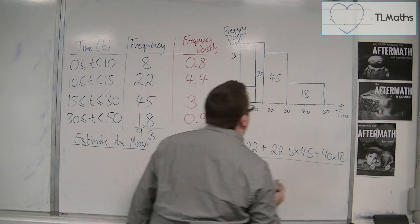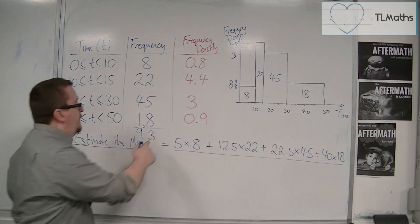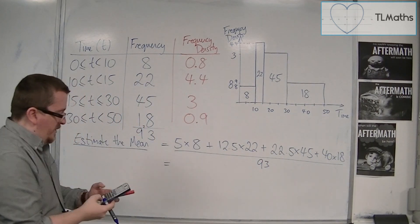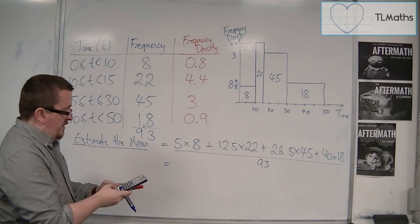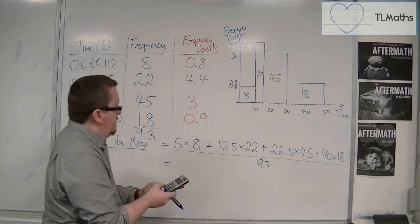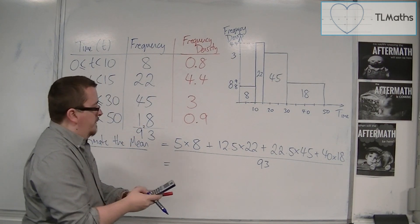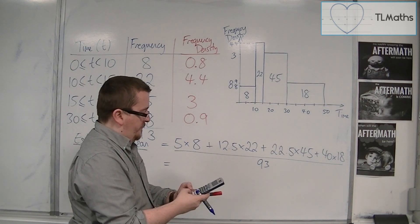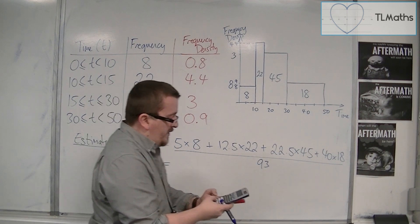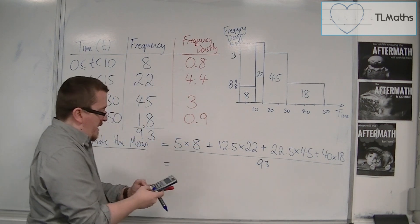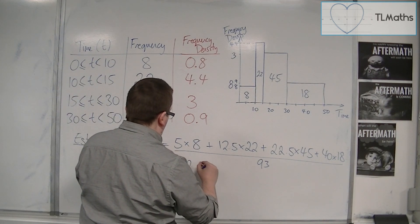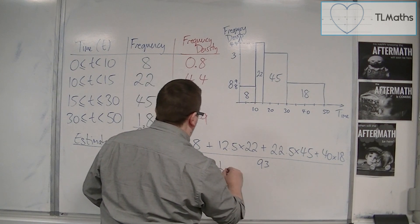And then I would divide that by the total number of frequencies. Total amount of frequency. So 93. So we'd have 5 times 8. Plus 12.5 times 22. Plus 22.5. Sorry. My calculator went wrong there. Plus 22.5 times 45. Plus 40 times 18. And then divide that by 93. And we get 22.02 to 2 decimal places.